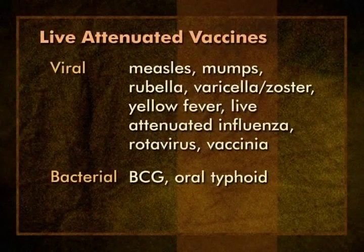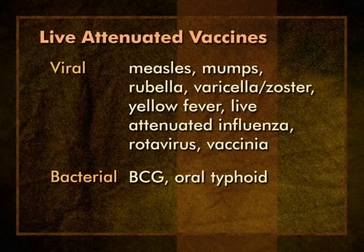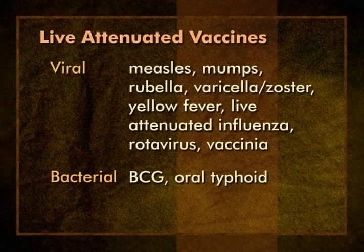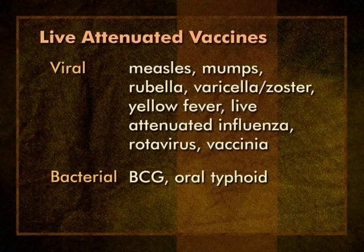We use several live attenuated vaccines in the United States. The live viral vaccines are measles, mumps, and rubella, which are usually given as combined MMR vaccine; varicella and zoster, which contain the same vaccine virus but in different amounts; yellow fever; live attenuated influenza; rotavirus; and vaccinia, or smallpox vaccine. Oral polio is a live virus vaccine but is not currently available in the United States. There are two live bacterial vaccines: BCG and oral typhoid. BCG is used for the prevention of tuberculosis. It is one of the most commonly used vaccines in the world. Most of you will never administer a dose of BCG vaccine since it is not available in the United States.